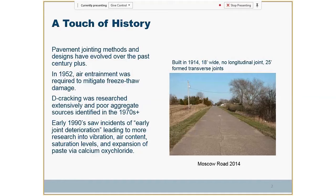Over the years we've tried a lot of different things to learn more about what we can do with joints. In the 1950s, we started realizing that because of the freeze-thaw characteristics especially in the upper midwest, we needed to do something about air entrainment so the water had area to expand during freeze-thaw cycles. D-cracking was another issue in some states. The reaction of aggregates, the delamination of aggregates in certain sources, and the problems that creates with joints has been a focus.